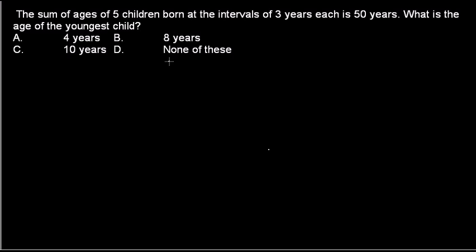In this problem, there are five children and none of the ages are provided. The only thing provided is that the sum of those individuals at intervals of three years each is 50 years. We need to find the age of the youngest child. It seems complicated, but for age problems, they always work in the same pattern.